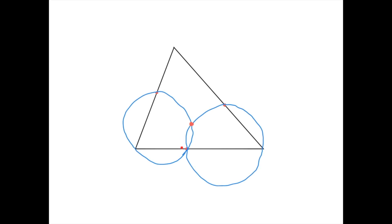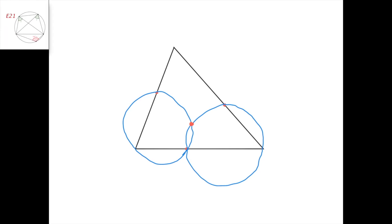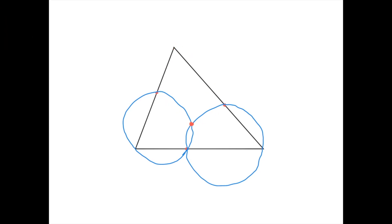I took this circle and this circle and intersected them at this point. We only need to prove that this quadrilateral here is cyclic, because that would mean the third circle — passing through these three points — also passes through this one. And so this will be the Miquel point.